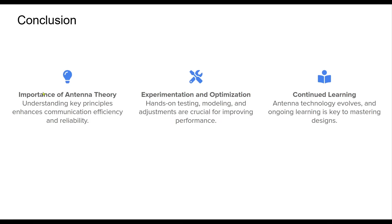Antenna theory is fundamental to efficient radio communication. By understanding concepts such as resonance, impedance matching, gain, polarization, and radiation patterns, operators can design and optimize antennas for maximum performance. Experimentation, modeling, and real-world testing are critical in refining designs and overcoming challenges. As technology evolves, continuous learning remains essential to staying ahead in antenna design and application. Whether for amateur radio, commercial systems, or research, mastering antenna principles opens the door to reliable and far-reaching communication. Thank you.